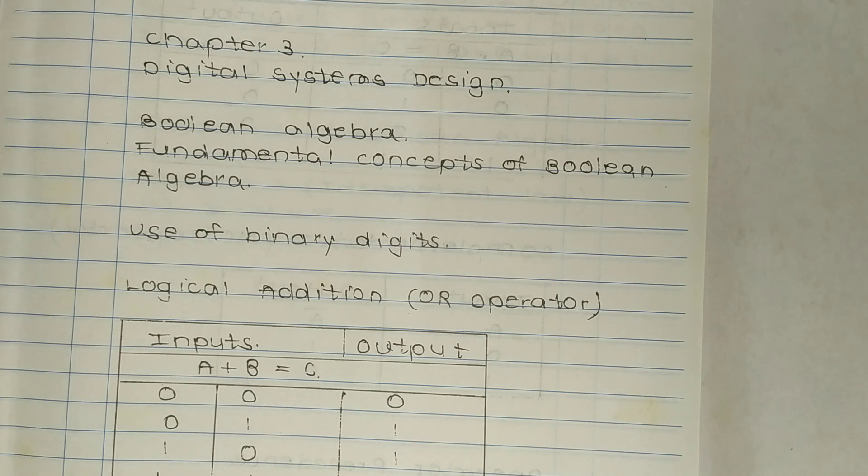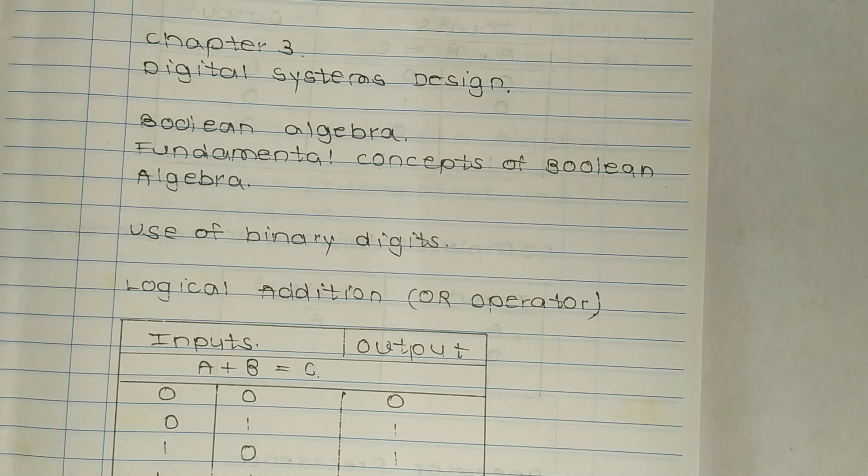Fundamental concepts of Boolean algebra: Use of binary digits. In normal algebraic expressions, a variable can take any numerical value. For example, in the expression 3a plus 7b equals c, each of the variables a, b, and c may have any value from the entire field of real numbers.